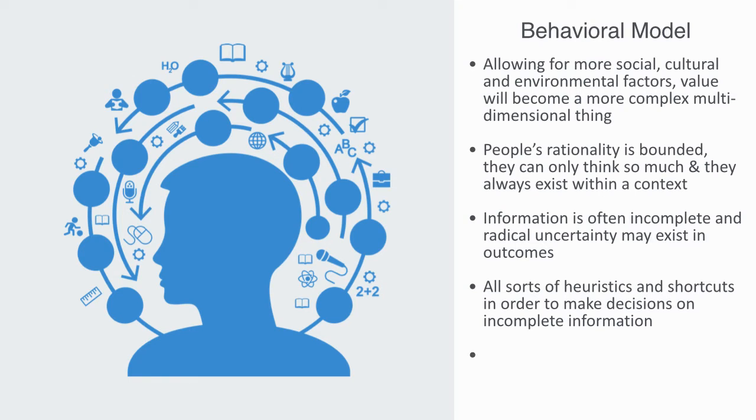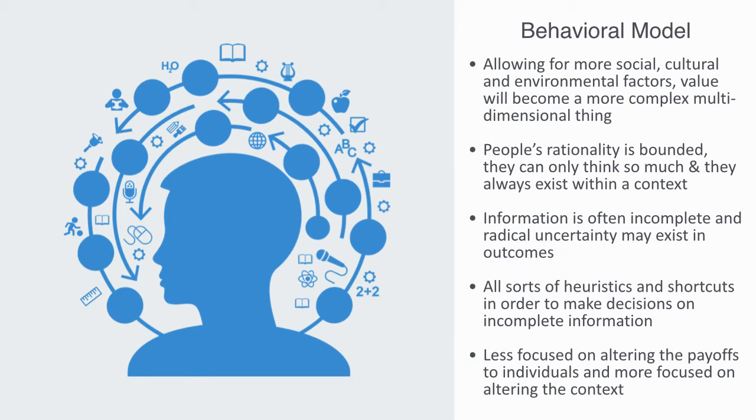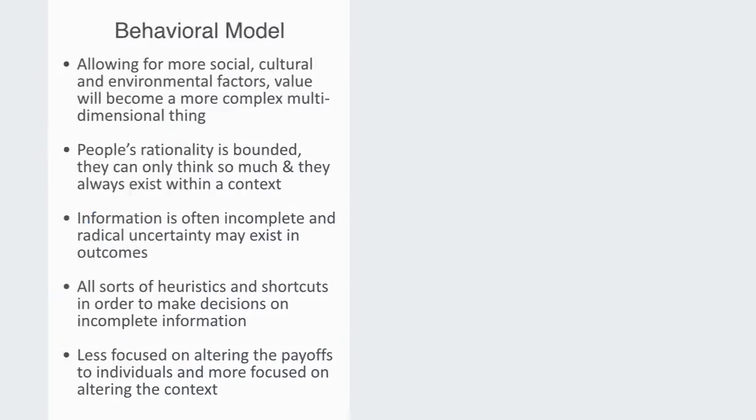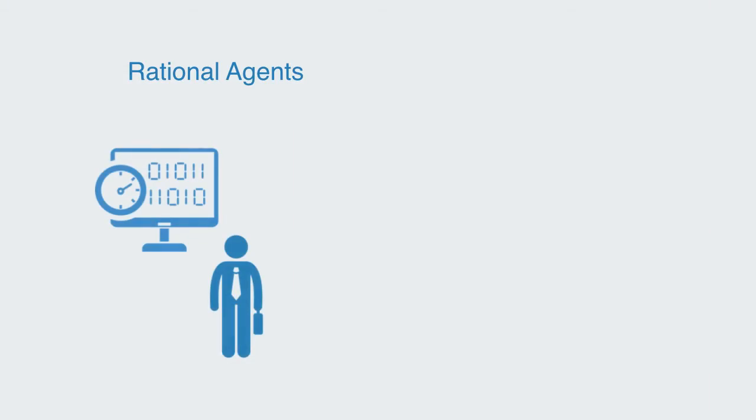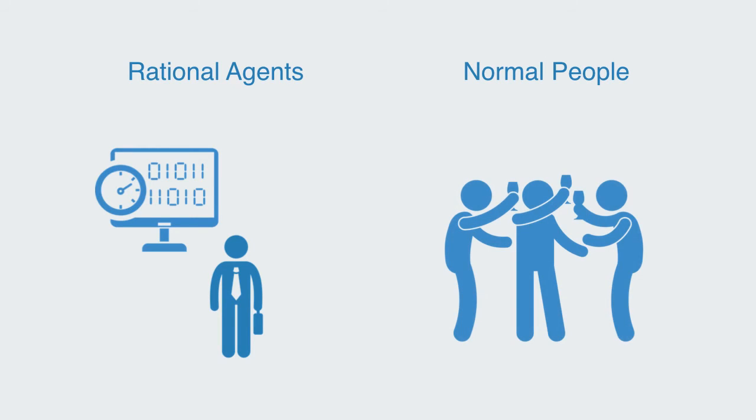we will get a very different answer as to how to design and build incentive systems. One that is less focused on altering the payoffs to individuals, and more focused on altering the context within which agents make their decisions. So this is a very quick overview of the two different models of economic agents. The first, which is very much theoretical. The second, which is very much empirically derived.